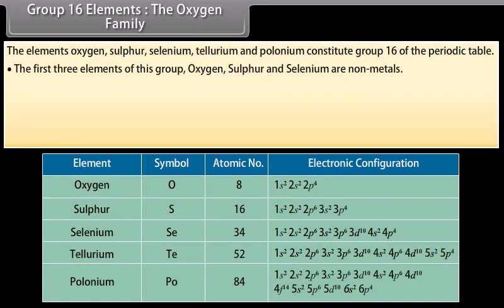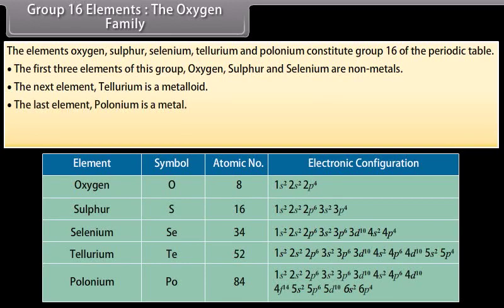The first three elements of this group - oxygen, sulfur and selenium - are non-metals. The next element, tellurium, is a metalloid. The last element, polonium, is a metal.